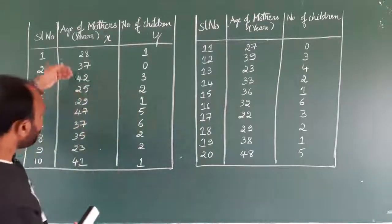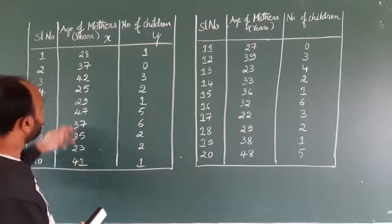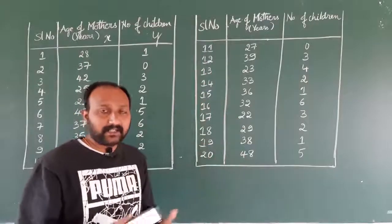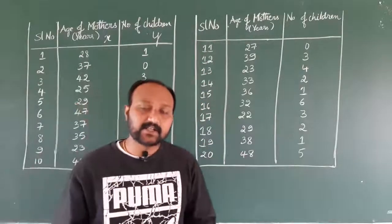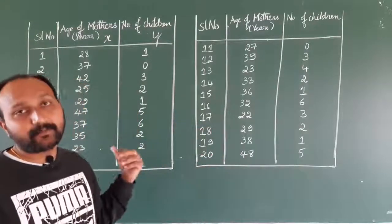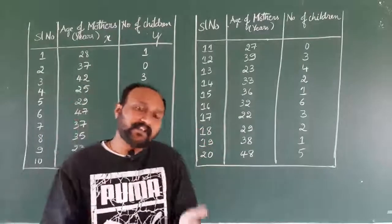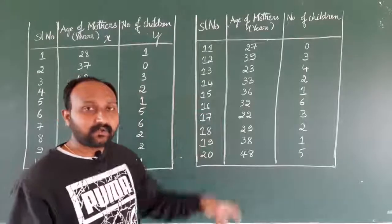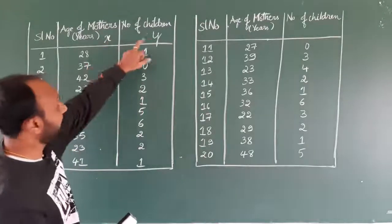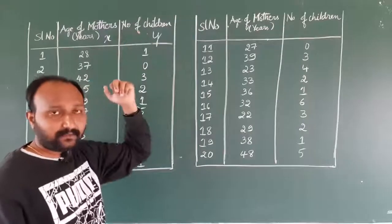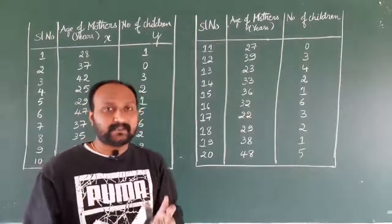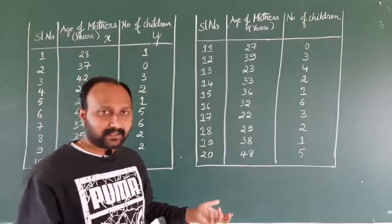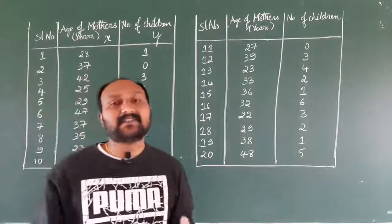We need to consider what is the lower value and what is the highest value for the age of mother. Then we need to know the range. After finding the range, we should know what is the number of classes that can be accommodated, followed by what should be the width of that particular class. Since there are two variables involved — unlike earlier when there was only one variable — this type of representing data in a table is referred to as bivariate frequency distribution.